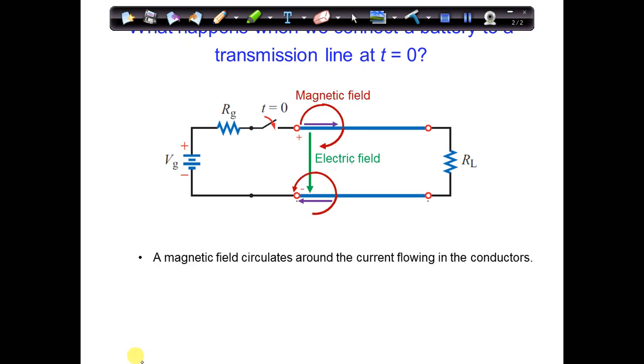You can see the magnetic field here. The magnetic fields are set up according to the right-hand rule, where you point your thumb in the direction of the current, and then the right-hand fingers curl around in the direction of the magnetic field.